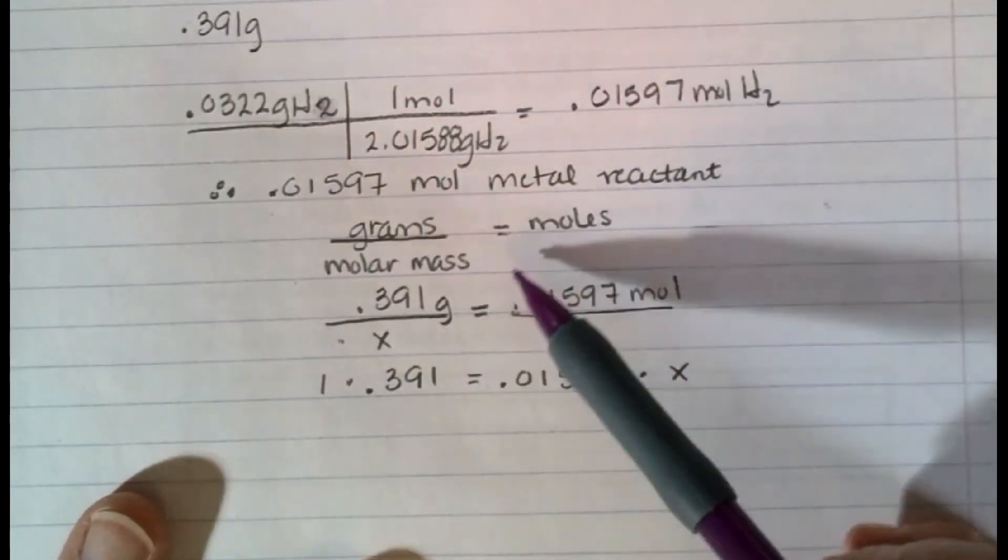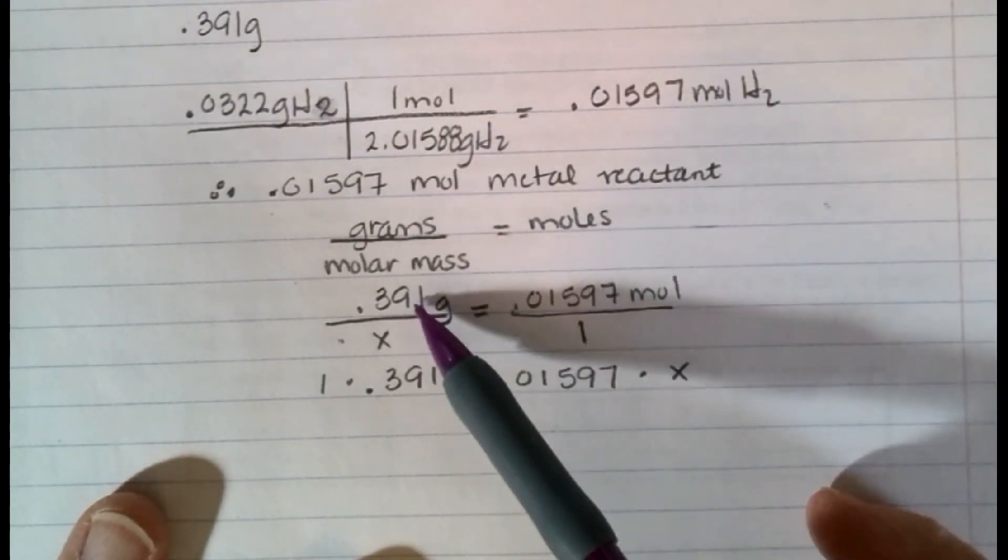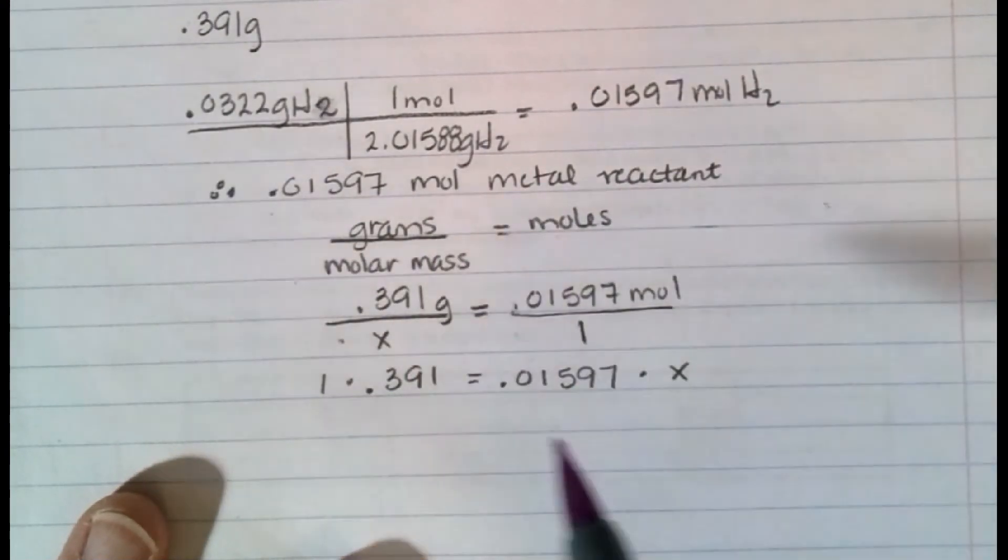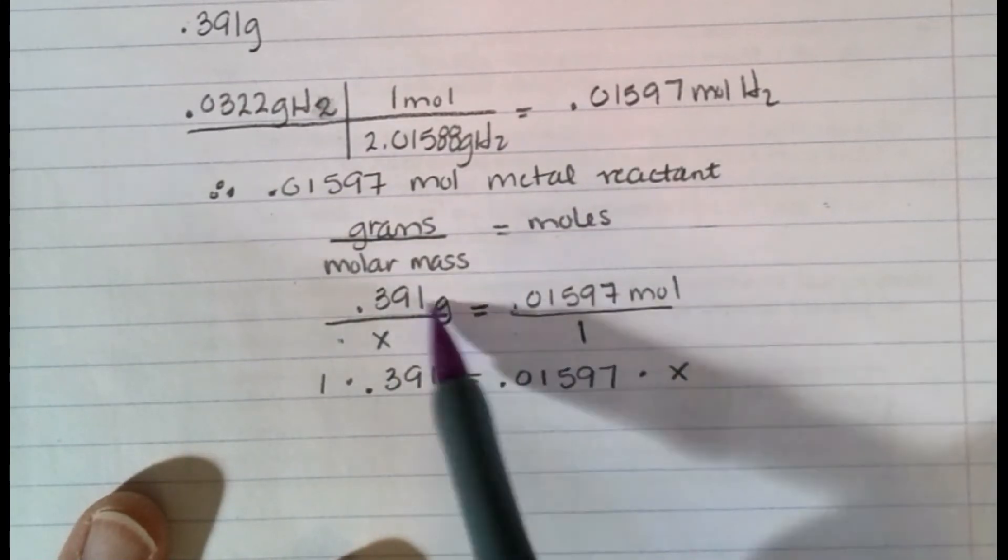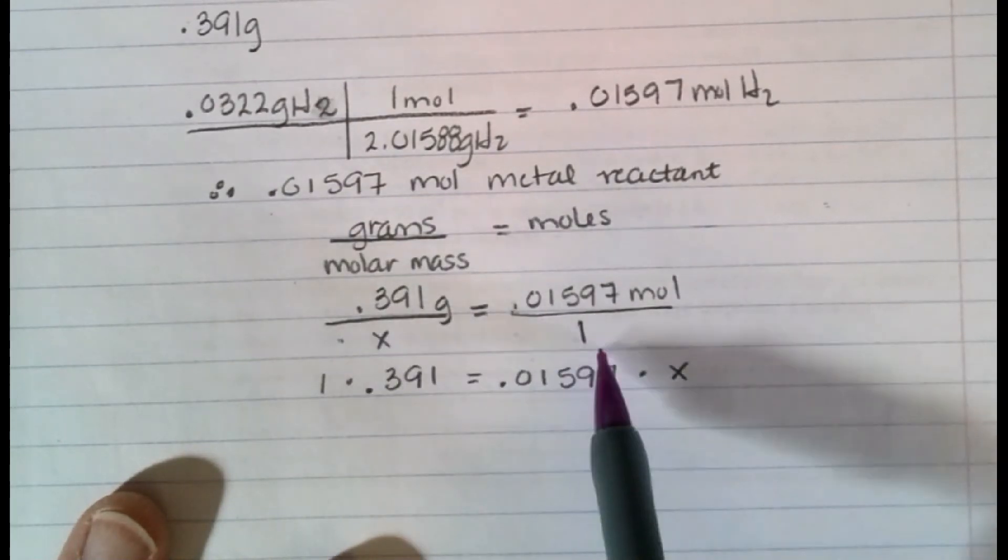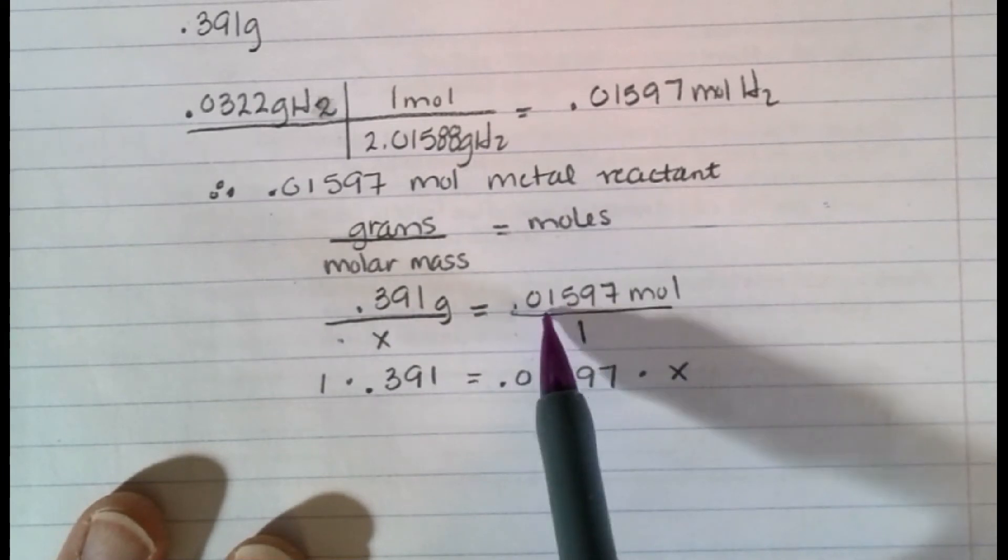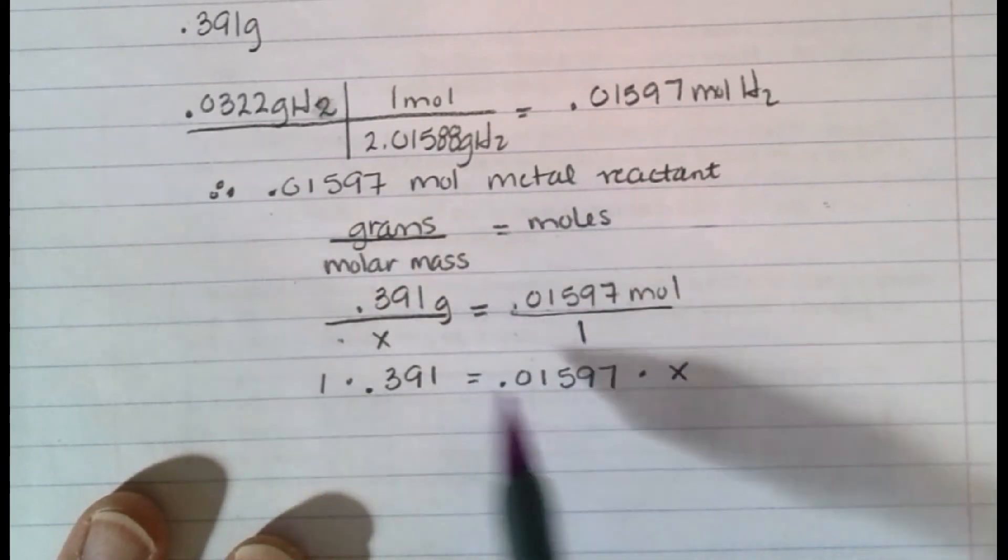So I have 0.391 is equal to 0.01597 times my x. This times 1, so you can see why I did that. It might help if I move my paper up for you to try to do that again. Alright, so what I did here is this, I understood this, so I plugged in my numbers, and I drew my line here to get this 1, so I can cross-multiply it, 0.391 times 1, and then 0.01597 times x.